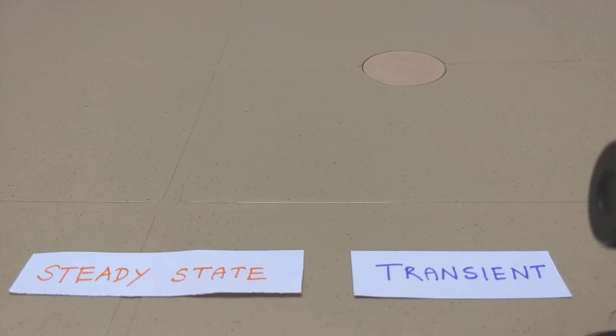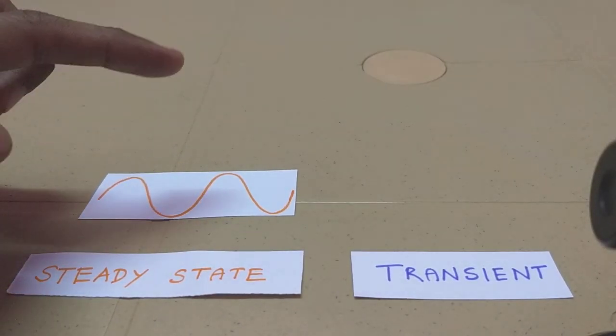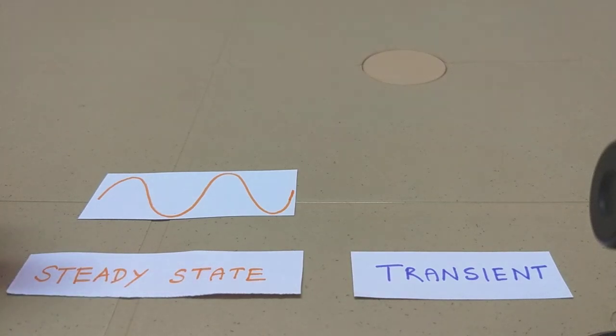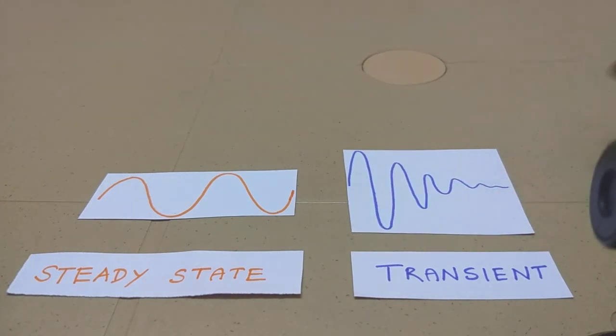So this is how a steady state signal looks like. Now notice the amplitude and frequency are constant with respect to time, and they also are repetitive with respect to time. And this is how a transient signal looks like. And notice the amplitude and frequency, they are not constant, and so they are also not repetitive with respect to time.